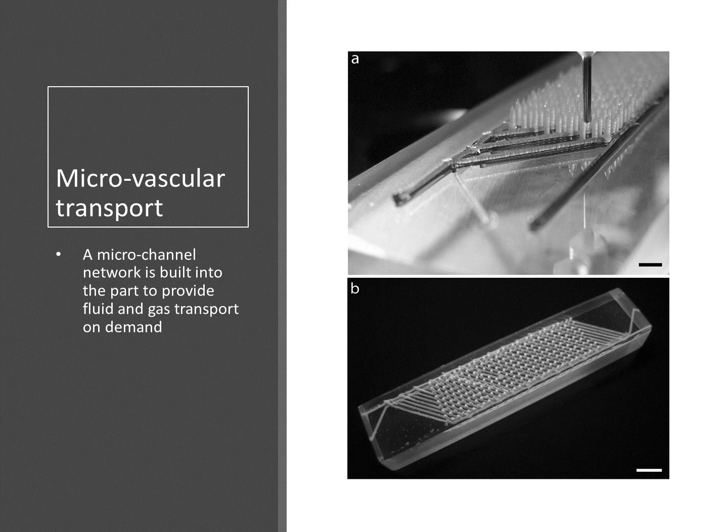Like self-healing, microvascular transport is also a biomimetic functionality. In this case, it imitates the microvascular system of living organisms. This technology allows leaving in place a microvascular system of microscopic channels inside a composite part as it is manufactured. Just like mammals sweat to dissipate body heat, one can make a structure sweat to dissipate heat, or to deliver de-icing chemicals to the leading edge of an aircraft's wing, or to blow or suck air to achieve turbulent flow control. The possibilities are limitless.